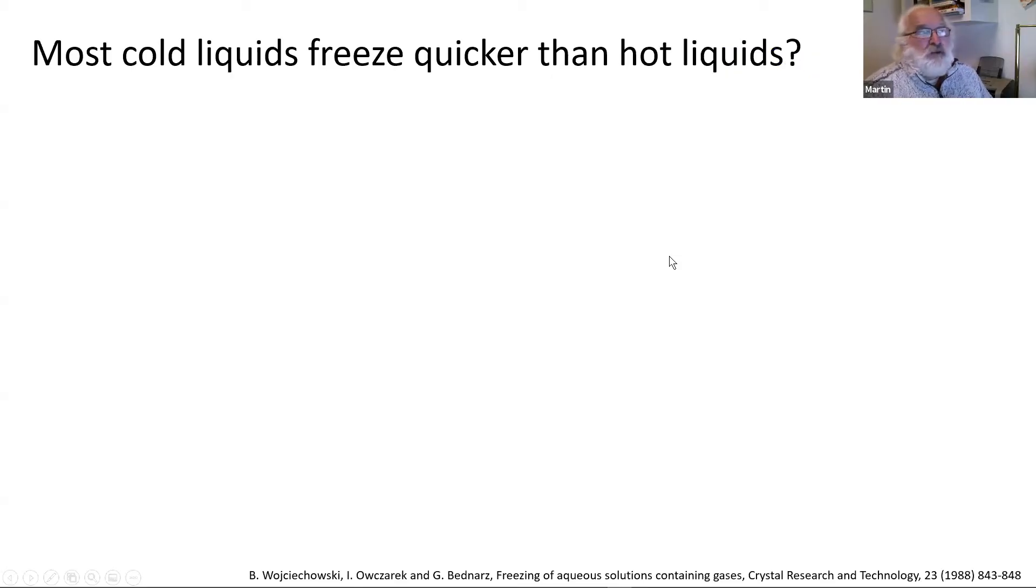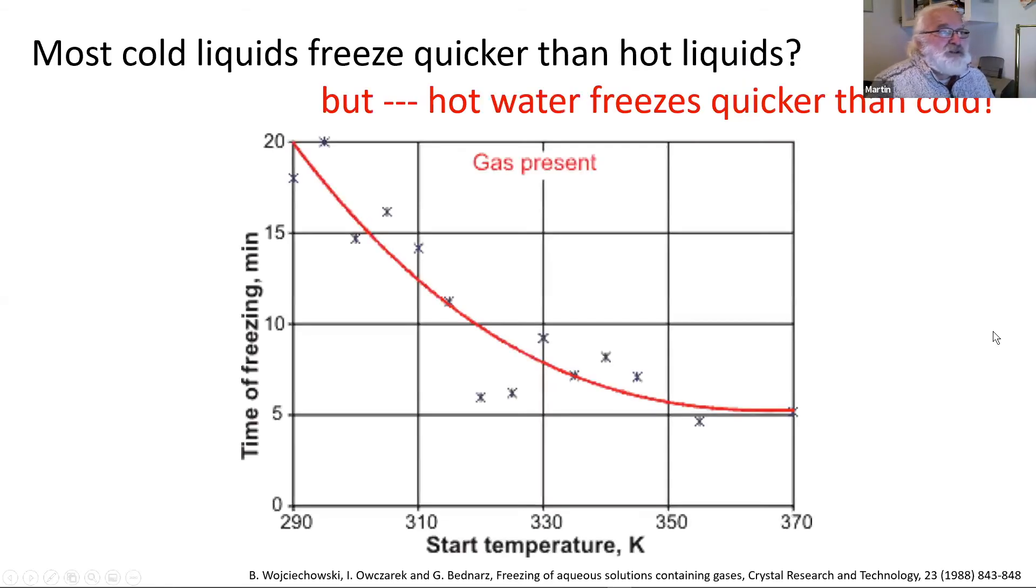Most cold liquids freeze quicker than hot liquids. It seems reasonable. If you start as a hot liquid and you cool it down, it's got to become a cold liquid before it freezes. But water is different. Hot water freezes quicker than cold, at least most of the time. Here you have a graph where the time of freezing, this is a long time at the top here, this is a short time, depending on the start temperature. So at 350 degrees it actually freezes in about six minutes, but at 290 degrees it took 20 minutes to freeze. That's a real strange thing that's still puzzling people today with various people having different views on why it happens, but it does happen.